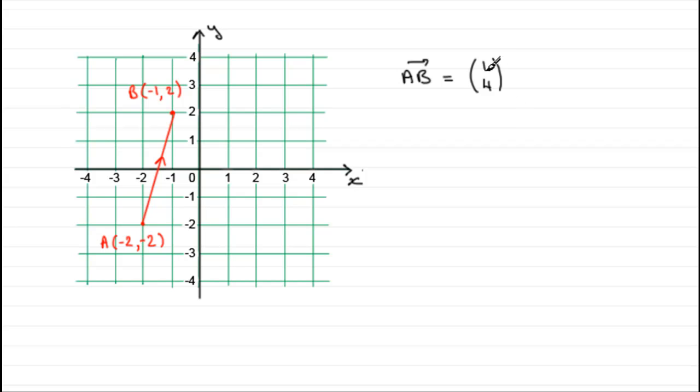The top number always tells us how much we go in the positive horizontal x direction and the bottom number tells us how much we rise in the positive y direction.